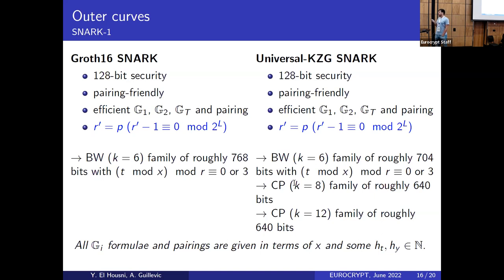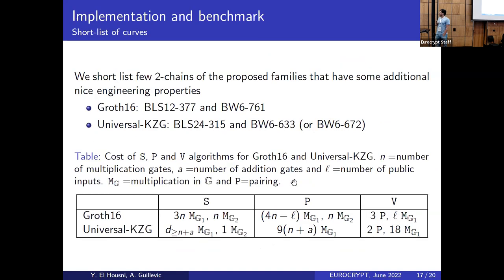We also examined Cocks-Pinch curves of higher embedding degrees — 8 and 12 — for more conservative security. We shortlisted a set of two-chain curve pairs from these families. For Groth16, our method rediscovers known curves: BLS12-377 and BW6-761. For universal KZG SNARKs, we sample new curves based on the BLS24 family. We show that BW6 is always faster than Cocks-Pinch 8 or Cocks-Pinch 12.